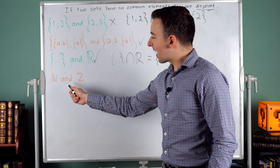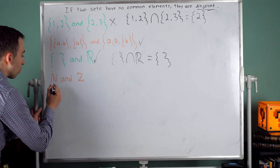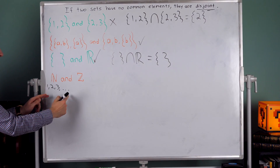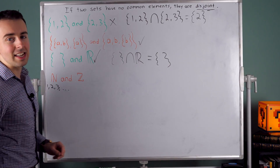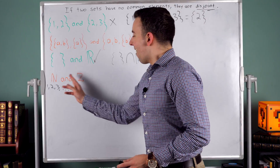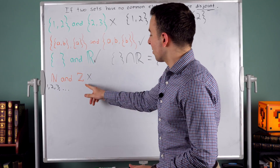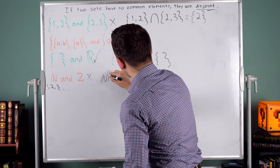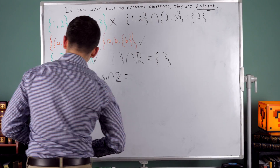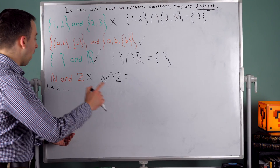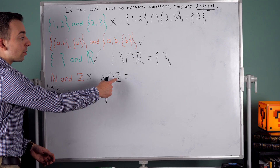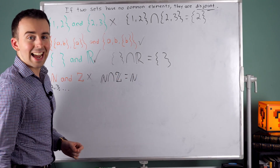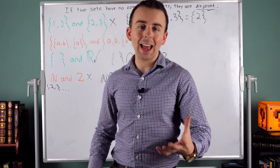Last example — consider the natural numbers and the integers. The natural numbers contain one, two, three, and so on. The integers contain all of these, as well as zero and the negatives. Are they disjoint sets? No, they are not. The integers contain all of the natural numbers. If we intersect the naturals with the integers, zero and the negative integers are not in the naturals, but all of the naturals are in the integers. So their intersection is actually just the natural numbers. They are not disjoint because they have elements in common.